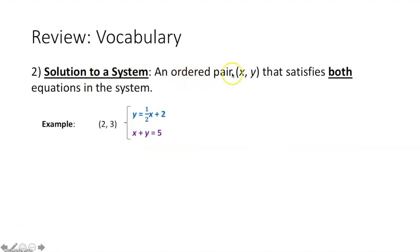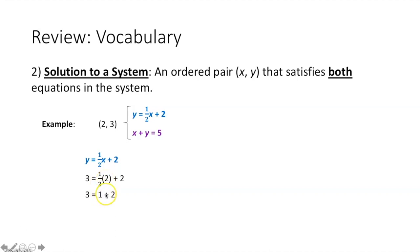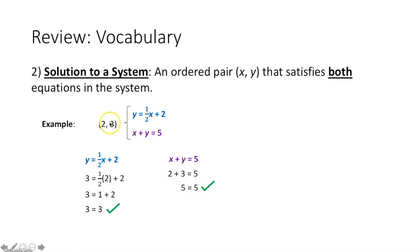A solution to a system is an ordered pair (x, y) that satisfies both equations in the system. Here we check: is (2, 3) a solution? We plug 2 in for x and 3 in for y in both equations. In the first equation, one-half times 2 is 1, and 1 plus 2 equals 3 — yes, 3 equals 3. In the second equation, 2 plus 3 equals 5 — yes, 5 equals 5. Therefore (2, 3) is a solution to this system.